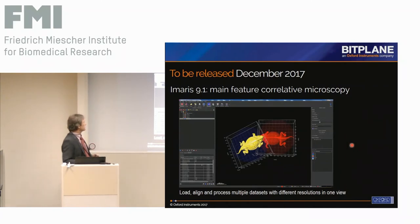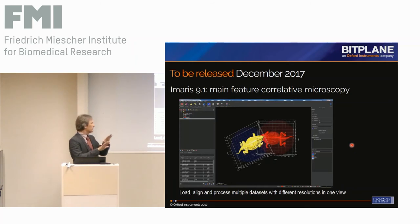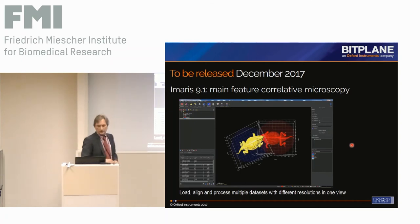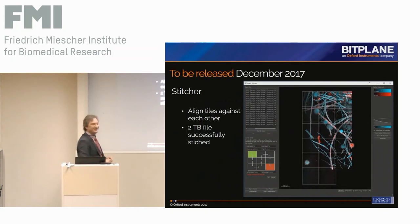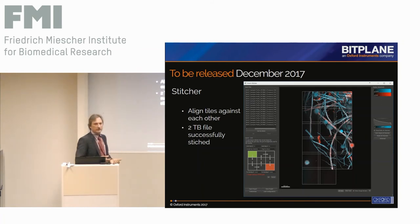In December 2017 we will release Imaris 9.1. The main new feature is Correlative Microscopy — you can load two datasets in different resolutions, put them in the same field of view, align them manually against each other, and then calculate structures on different parts of the volume. Also released now in December is a stitcher. Peter, who was here in the morning, had just managed last weekend to stitch a two-terabyte file — quite encouraging that this will be a good tool for large datasets.